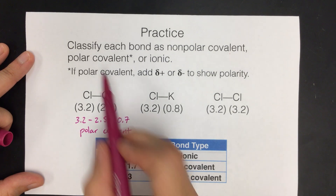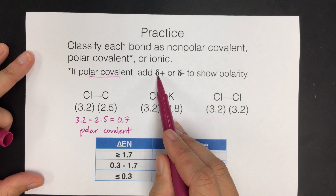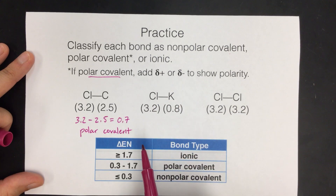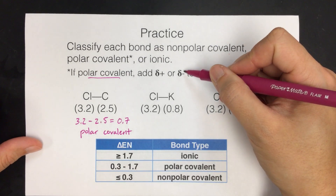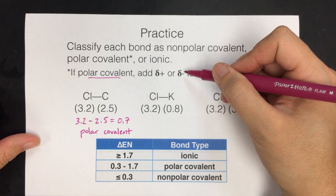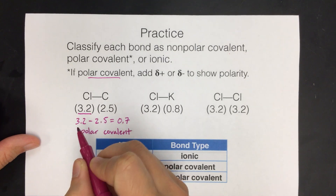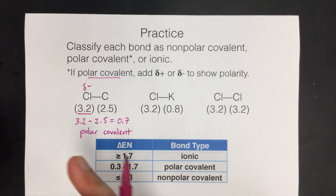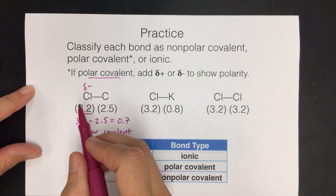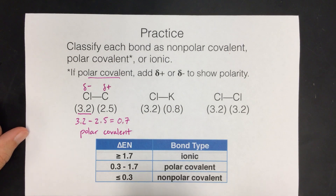Since it's polar covalent, we do an extra step and show the polarity by putting delta plus and delta minus above the atoms. We put the partial negative sign above the atom that's more electronegative. Chlorine is more electronegative, so it's going to be partially negative — it's pulling the electrons closer to it. That makes carbon partially positive. So it's always one atom partially negative and one partially positive.